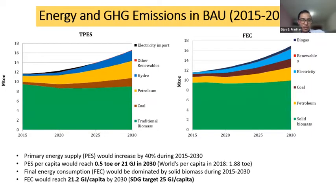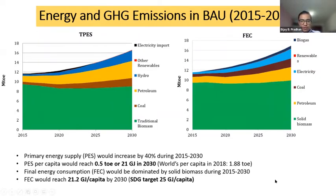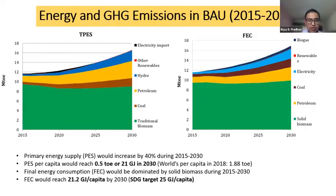The graph here shows energy and GHG emissions in BAU. The primary energy supply will increase by 40% during 2015 to 2030. The primary energy supply per capita in Nepal will be 21 GJ in 2030. The final energy consumption will be dominated by solid biomass throughout 2015 to 2030, but the use of other fuels will increase. The final energy consumption would reach 21.2 GJ per capita by 2030, which would still be lower than the SDG target of 25 GJ per capita.